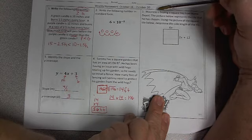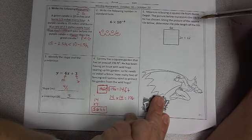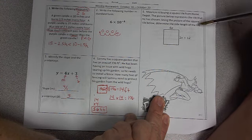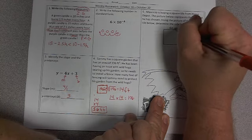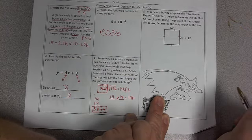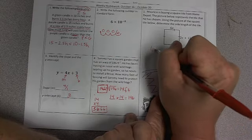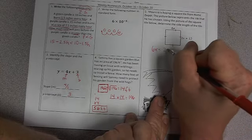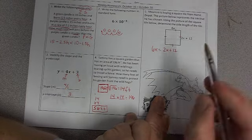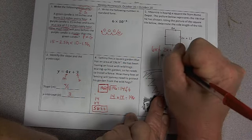Number 5. Mauricio is buying a square tile from Home Depot. The picture below represents the tile that he has chosen. Using the picture of the square tile, determine the side lengths of the tile. So we know it's a square tile, and we know that squares have congruent side lengths. And since they have congruent side lengths, I can make 6x equal 2x plus 12, because those two sides are equal. They're congruent. So set those two expressions equal to each other, and now let's solve this two-step equation.